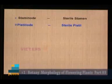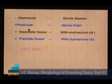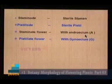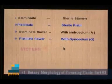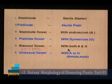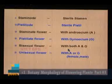Some relevant terms: staminode is the sterile stamen; pistillode is the sterile pistil or gynoecium. Staminate flower — flower with androecium or stamen. Pistillate flower — flower with pistil or gynoecium. Bisexual flower — flower with both androecium and gynoecium. Unisexual flower — flower with either androecium or gynoecium, meaning male and female flowers. For example, cucurbits — we can see two types of flowers. In a female flower, we can see a small fruit at the base. The male flower falls off very early.